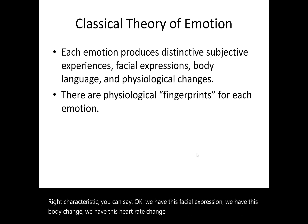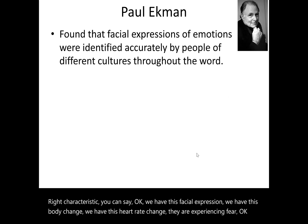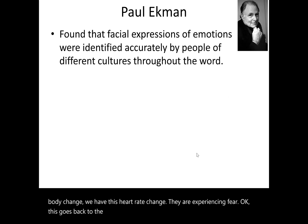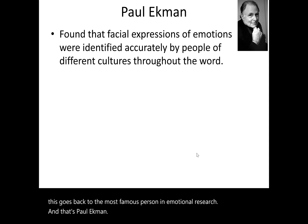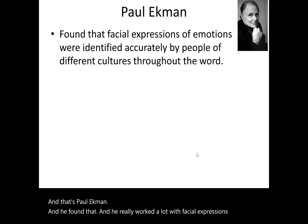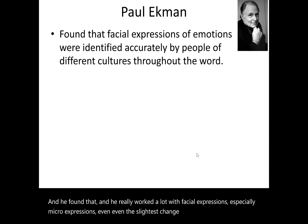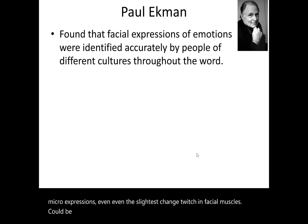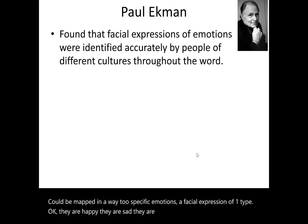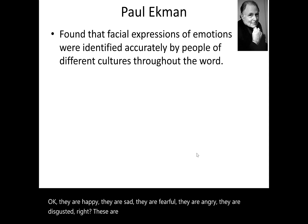This brings us to Paul Ekman, the most famous person in emotional research. He worked extensively with facial expressions, especially micro-expressions — even the slightest twitch in facial muscles could be mapped to specific emotions. He found he could take pictures of people experiencing extreme emotions — extreme smiling or extreme anger — and show these images all over the world, and no matter what culture, people correctly identified the emotions. This aligns with Darwin's theories that emotions are innate and universal.